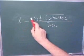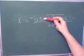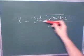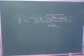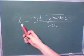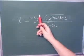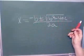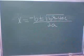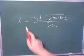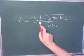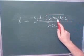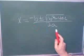X equals negative B plus or minus the square root of B squared minus 4AC all over 2A. Say it with me again. X equals negative B plus or minus the square root of B squared minus 4AC all over 2A. One more time. X equals negative B plus or minus the square root of B squared minus 4AC all over 2A.